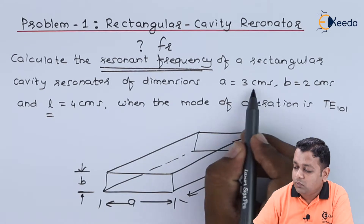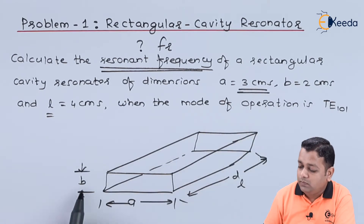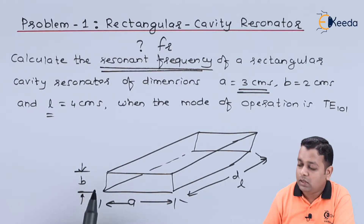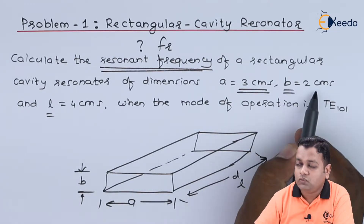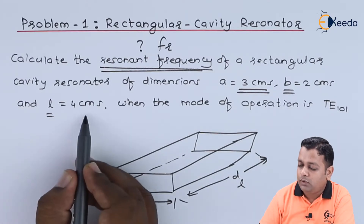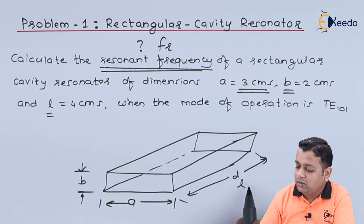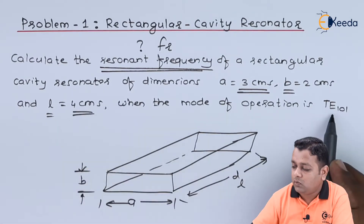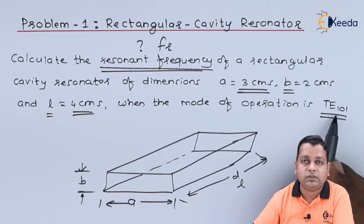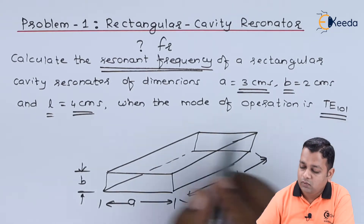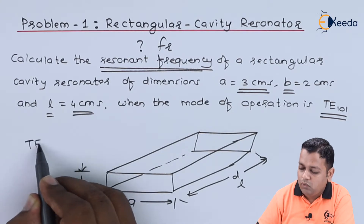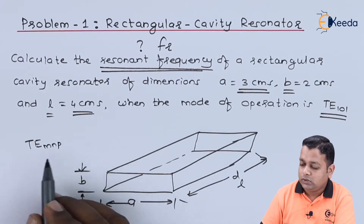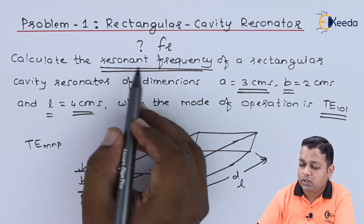Small a is the broader dimension of the rectangular cross section, equal to 3 cm. Small b is the smaller dimension, equal to 2 cm. The length l is equal to 4 cm. The mode of operation is TE suffix 101, which can be written generally as T suffix mnp.